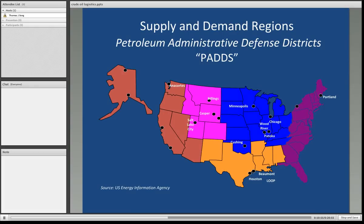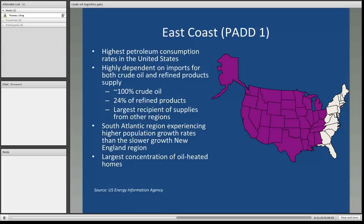Back during World War II, the United States was concerned about the supply of crude oil — in large part because of the amounts being refined into products used to fight the war, and the rationing of domestic supplies to industrials, commercials, and households. So they formed what are known as the Petroleum Administrative Defense Districts, or PADs. These are still in existence today, still used to quantify supply and demand in the various regions, and prices are reported by PAD districts.